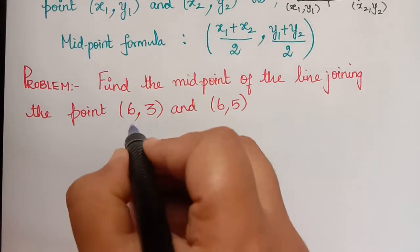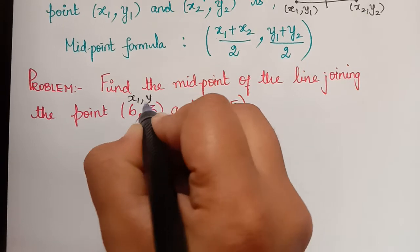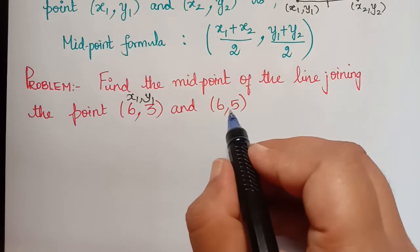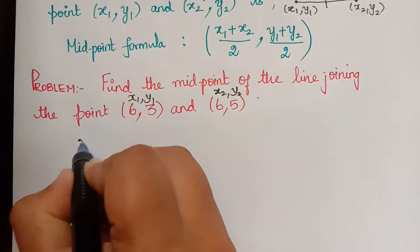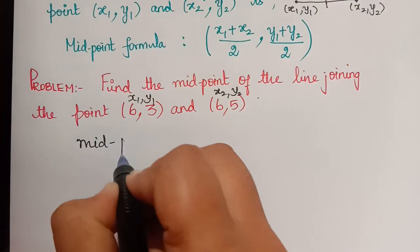Now here this point has the coordinate x1 comma y1 and the coordinates of this point can be taken as x2 comma y2, and so the midpoint will be...